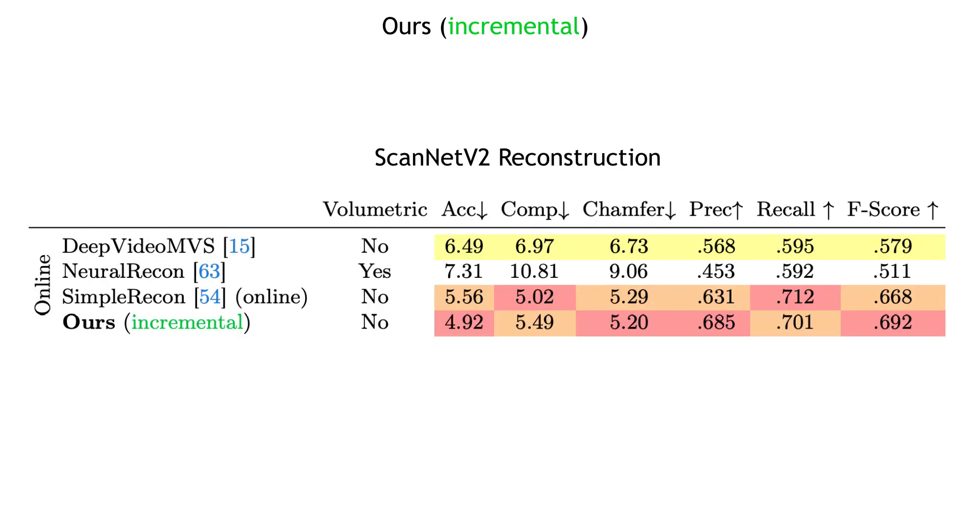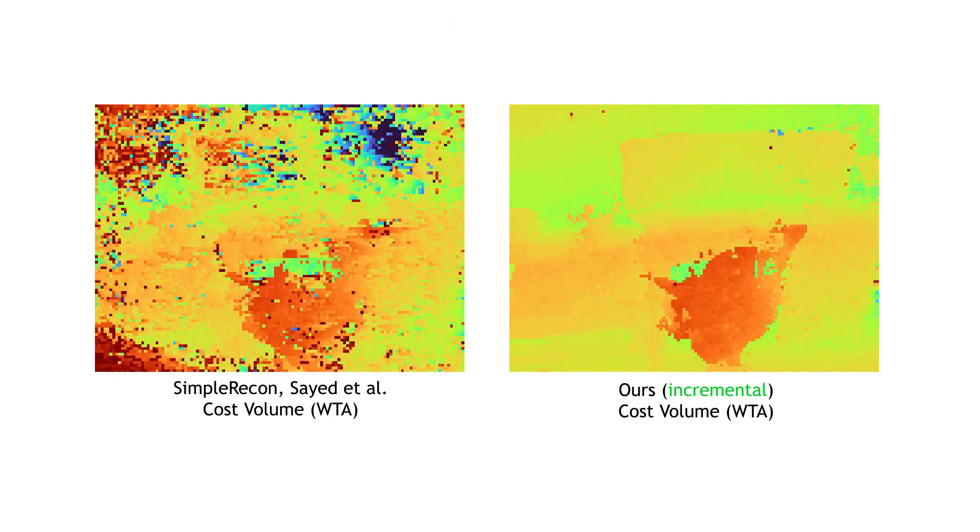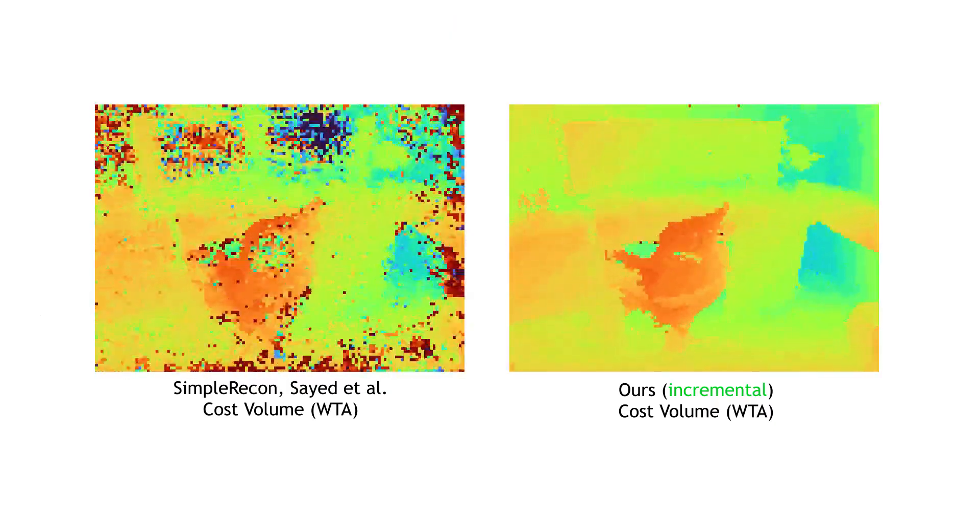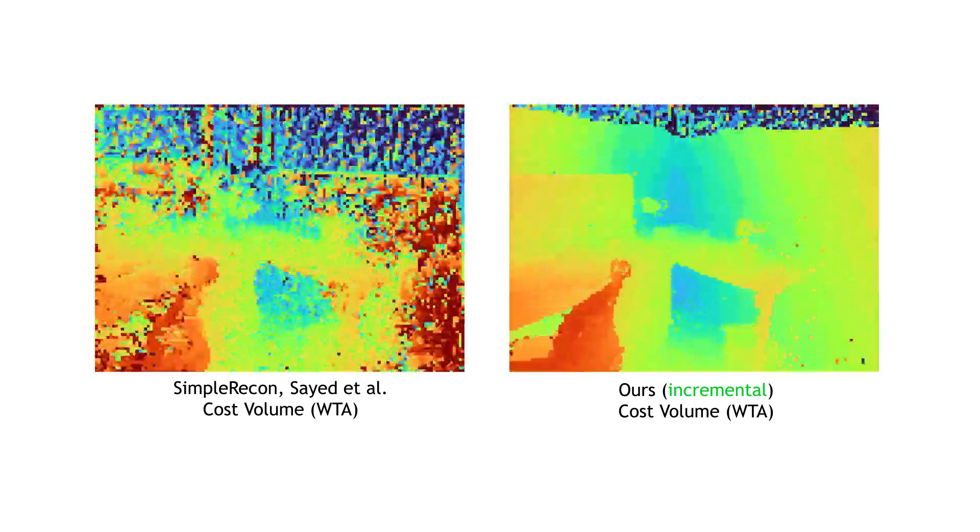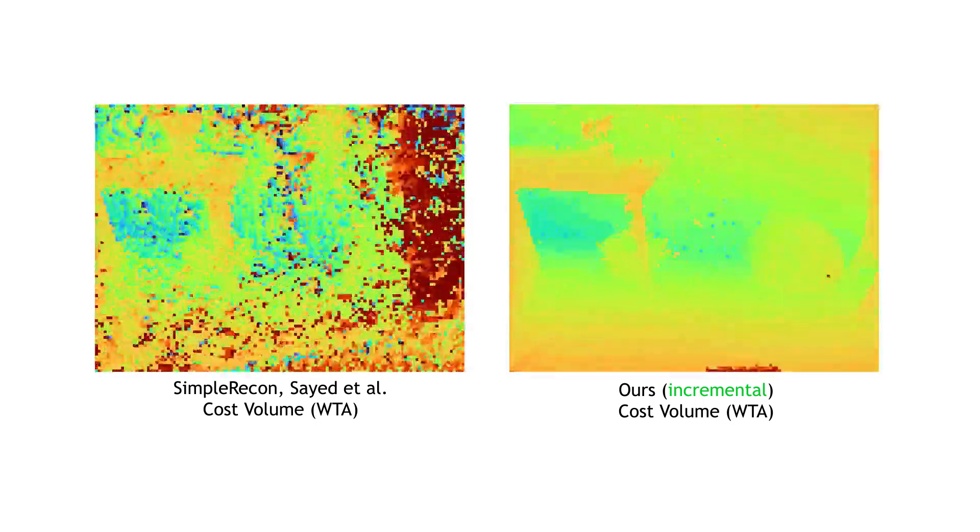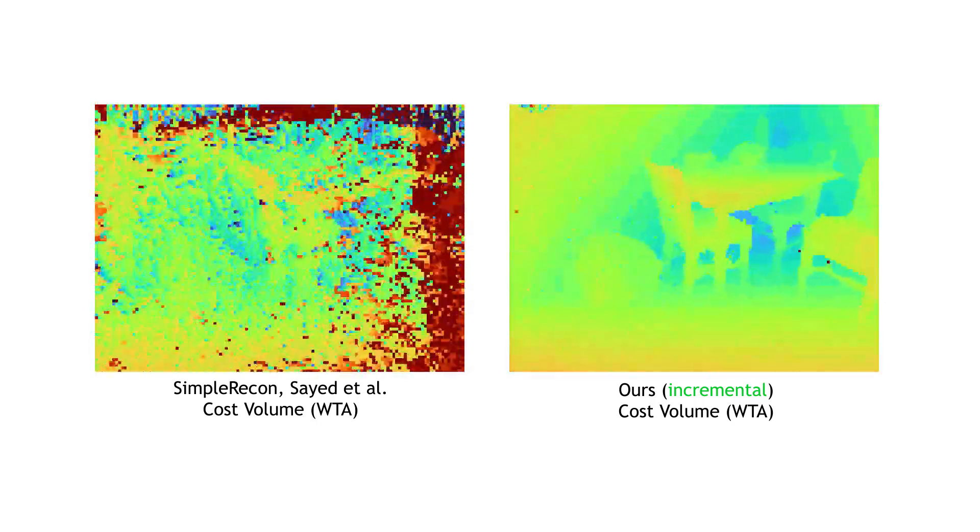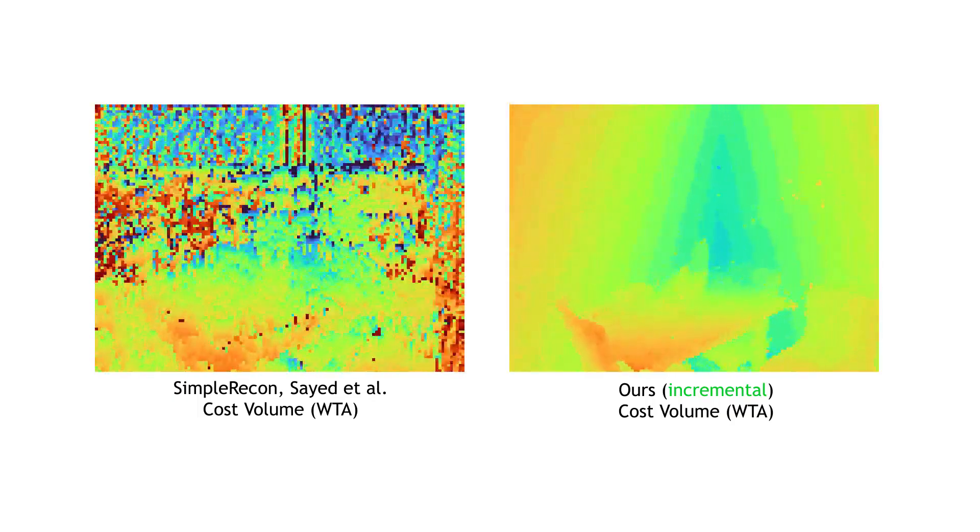The model also achieves a new state-of-the-art for online 3D reconstruction. When looking at the winner-takes-all estimates from the cost volume side-by-side, it is clear why our model outperforms the baseline. Utilizing the aggregated global geometry of previous predictions allows the model to achieve a much better metric estimate given a much less noisy cost volume.